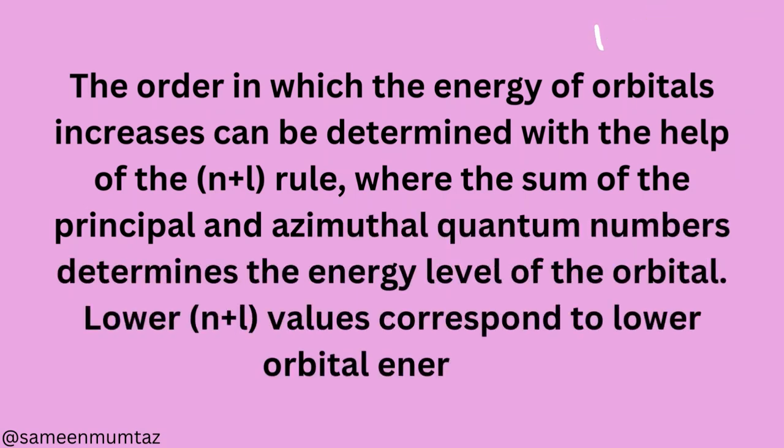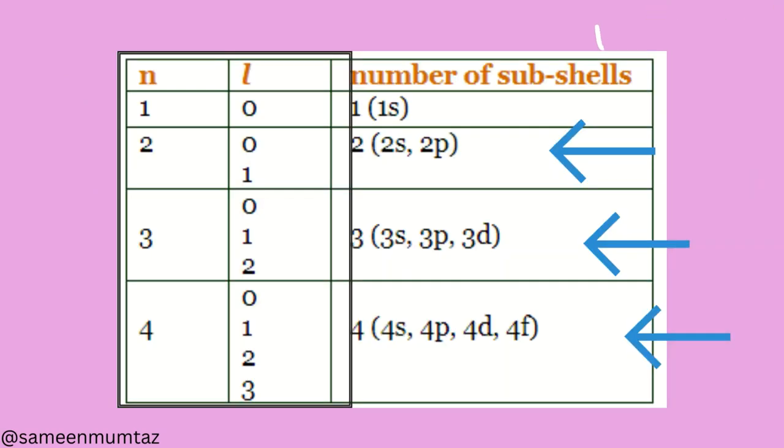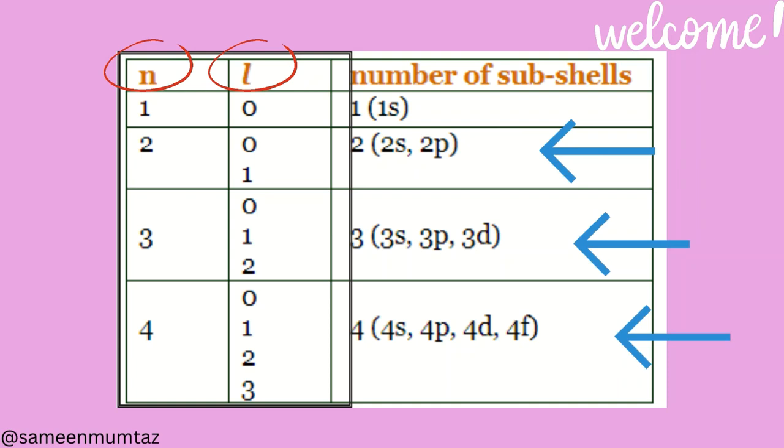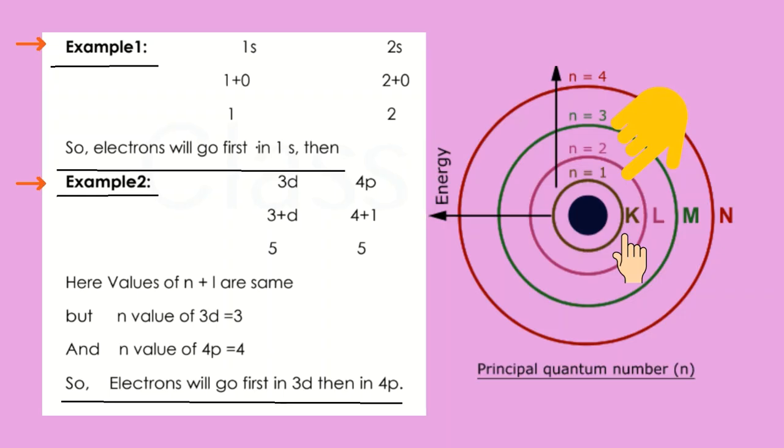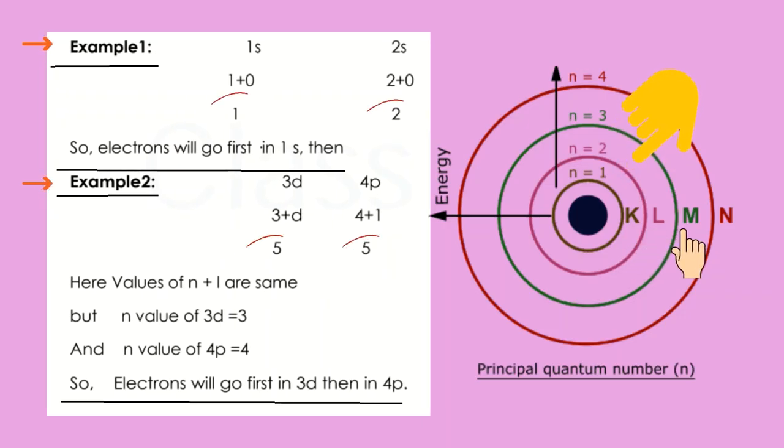The sum of the principal and azimuthal quantum numbers determines the energy level of the orbital. Lower n plus l values correspond to lower orbital energies. For n plus l, n value of shell are 1, 2, 3, 4, 5 and so on. Where l value of subshell are s equals 0, p equals 1, d equals 2, f equals 3.